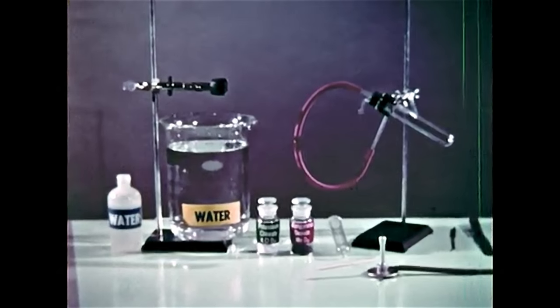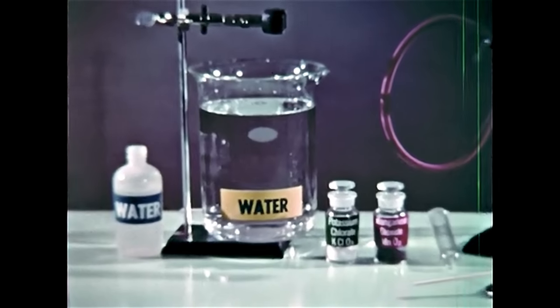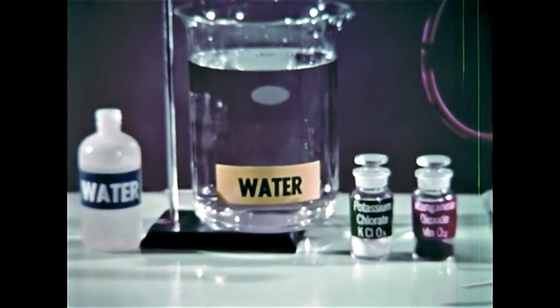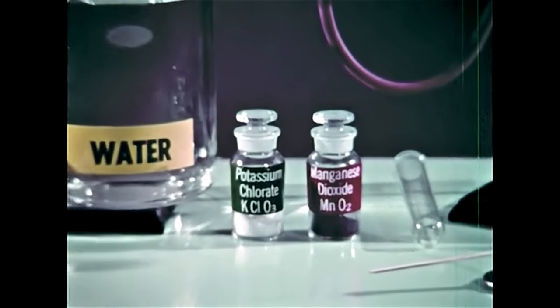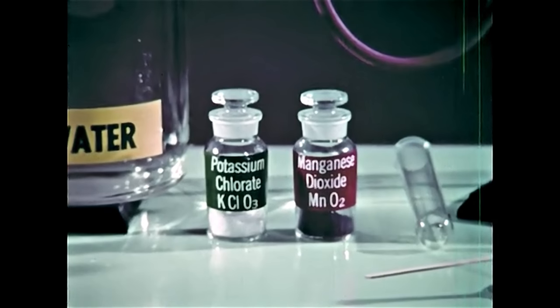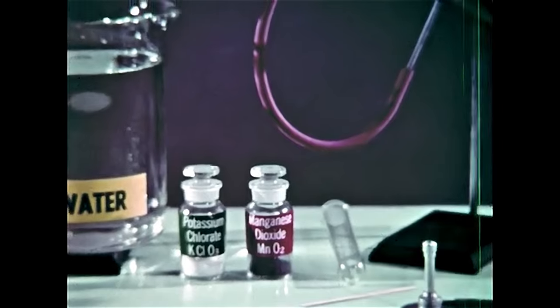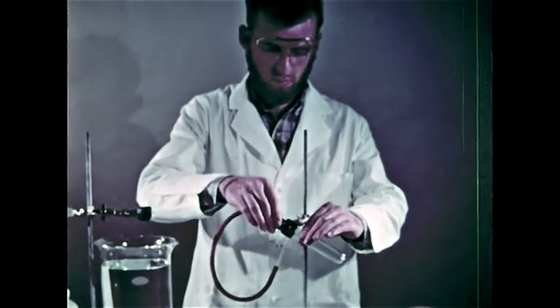In this demonstration we'll collect the oxygen by driving it into a test tube, which will be filled with water and set in this beaker. The compound containing oxygen is potassium chlorate and the catalyst is again manganese dioxide. This is the most common and convenient way of preparing oxygen in a laboratory.